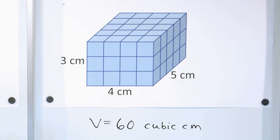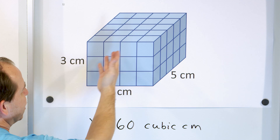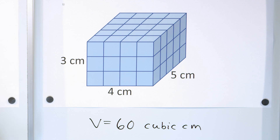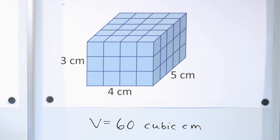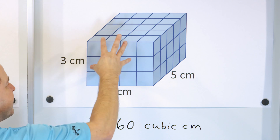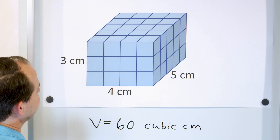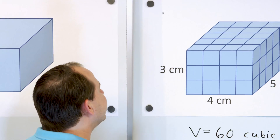Now, I'm looking at this and thinking to myself, this is very familiar — this is one of the same problems we did in the last lesson. That's my fault; I printed out two of the same ones. Sorry about that. So the volume of this is 60 cubic centimeters.